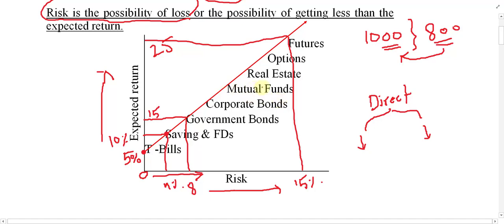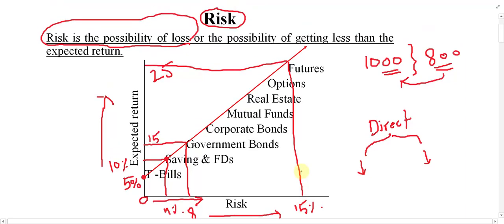After government bonds, there are other securities like corporate bonds, mutual funds, real estate, options, and so on. There is a sequence between these securities — as much as you move upward, risk increases and return also increases. To summarize: risk is the possibility of loss or the possibility of getting less than expected return. There is a direct relationship between risk and return — if you want more return, you must accept more risk; if you want less risk, you must accept less return.